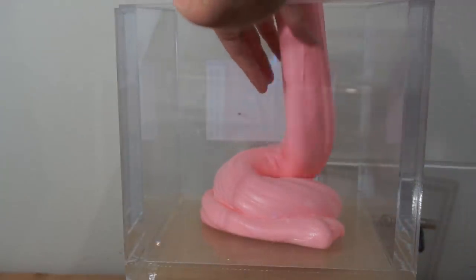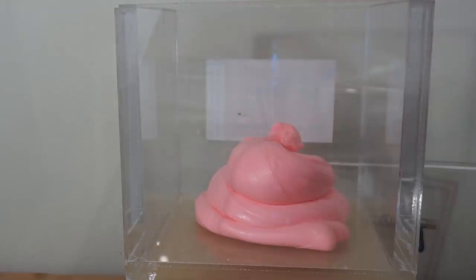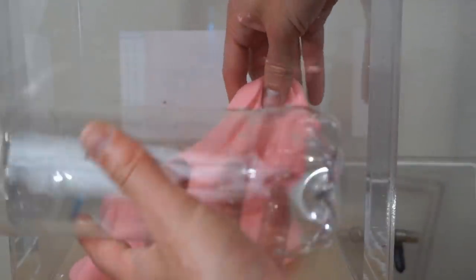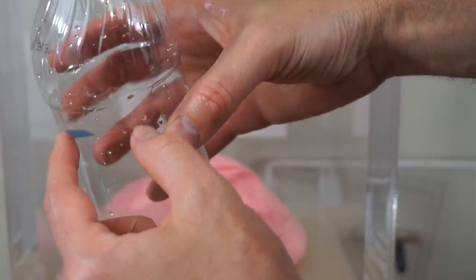So first I'm going to put it in just like this and see what it does in the vacuum chamber. And then I'm going to have it in this bottle. And this bottle has holes in it so as it expands it's going to extrude out the holes. It should look pretty cool.